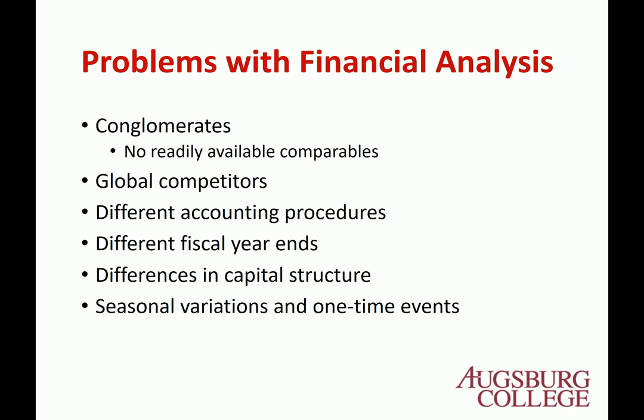Differences in capital structure — every company has a different capital structure. Seasonal variation and one-time events — that's a company-specific event or sometimes a seasonal problem. To compare those types of problems with others, you need to correct something. For example, an ice cream company — their sales increase a lot in the summertime and decrease in the wintertime. If you directly compare with another food company, you distort the story because your summer performance is too good and your winter performance is too bad. So there are certain types of problems you can have in analyzing financial statements.